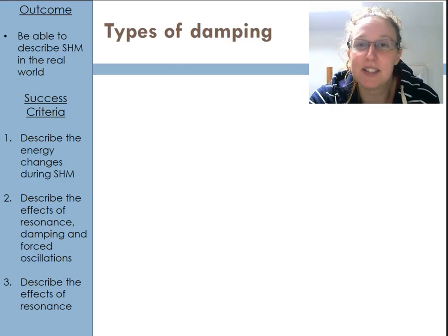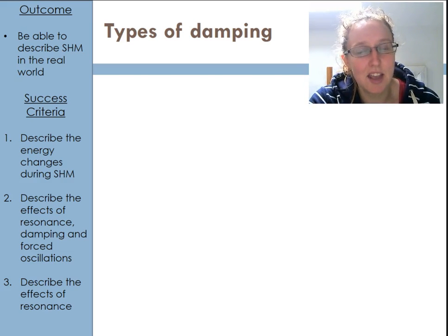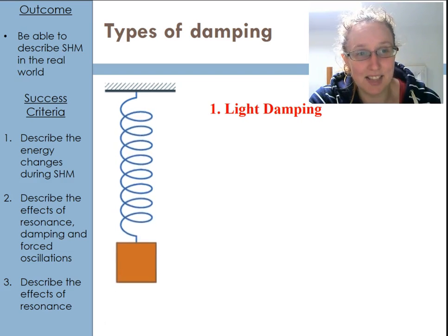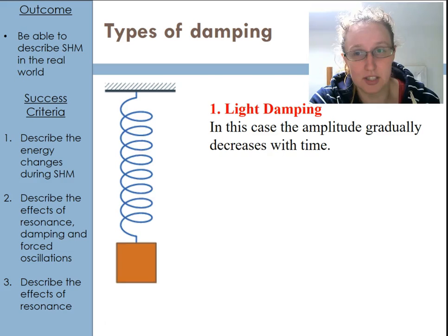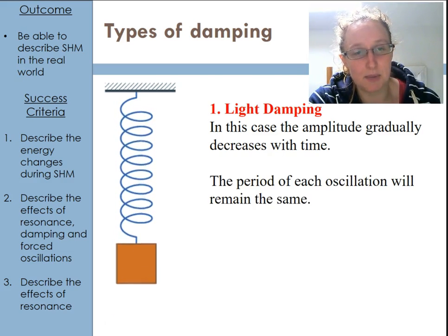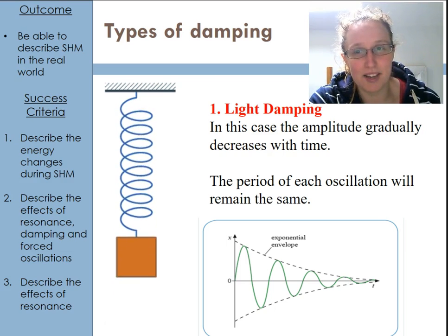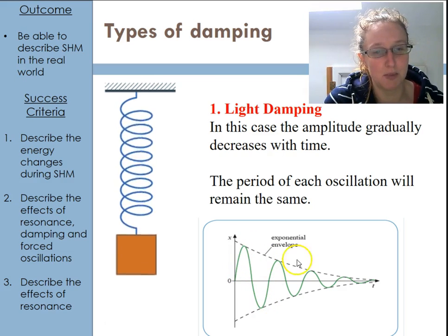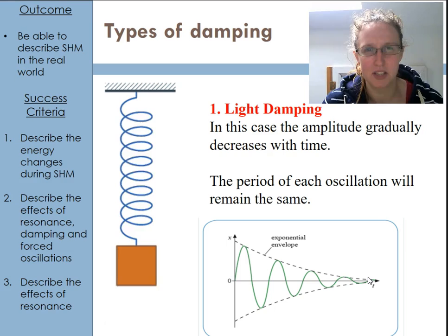We classify damping based on how big of an effect it has, and there are three types we need to know. There is light damping, in which case the amplitude gradually decreases with time. In this type, the period of each oscillation will remain the same, and we find that the magnitude of the displacement just decreases each time, but it's still happening over the same time period.